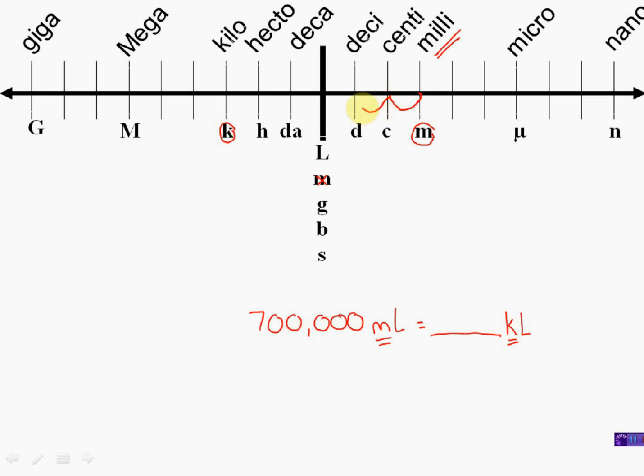So let's find out how many places that is. That's one, two, three, four, five, six. Now I'm going to move my decimal point six places that way. I'm going to put an imaginary decimal point right here. All right. I'm going to move it. One, two, three, four, five, six. So my new answer is going to be 0.7 kiloliters. That's right, 0.7 kiloliters.